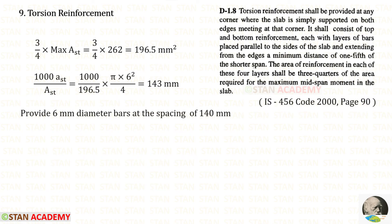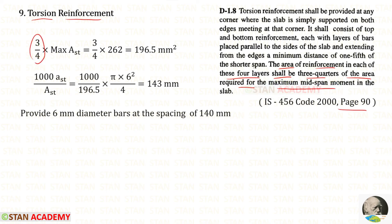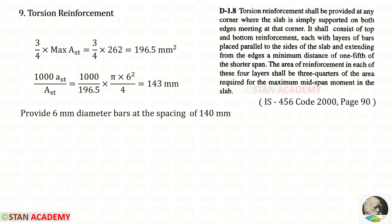Since corners are held down, we must provide torsion reinforcement. From IS code page 90, the area of reinforcement in each of the four layers shall be 3/4 of the area required for the maximum mid-span moment, which is the maximum AST = 262 mm². The torsion reinforcement area = 3/4 × 262 = 196.5 mm², placed in four layers at all four corners for a minimum distance of LX/5. Using 6 mm diameter bars, the spacing works out to 143 mm, rounded to 140 mm.